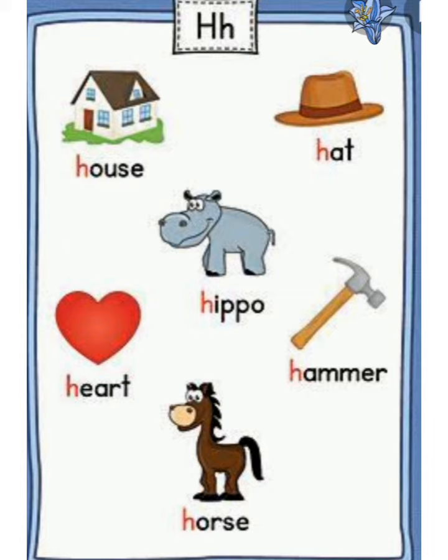Very good. Now repeat like this. H is for house. H is for head. H is for hippo. H is for heart. H is for hammer. H is for horse.